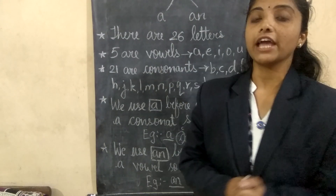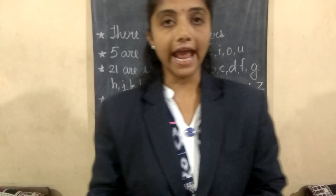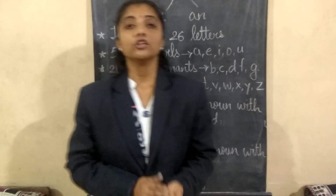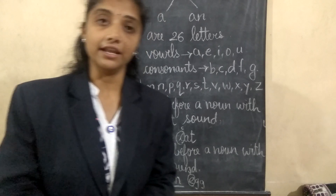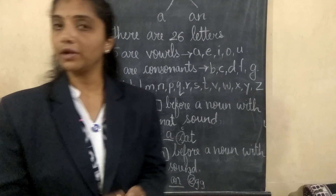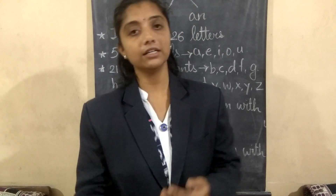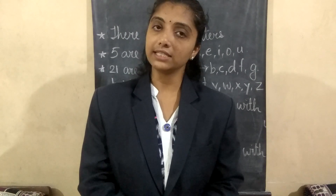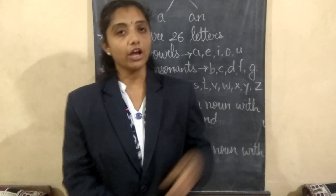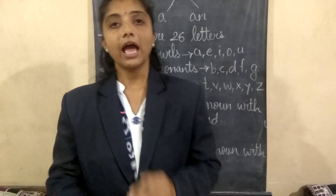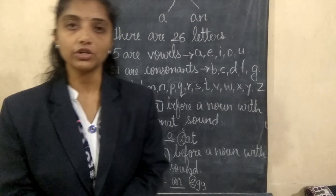So today we have learned about the articles 'a' and 'an'. There are two articles: 'a' and 'an'. 'The' is also there, but we are not going to learn it for first standard — that will be taught in the second standard. So children, we are going to stop here for today and continue in the next session. Thank you children.